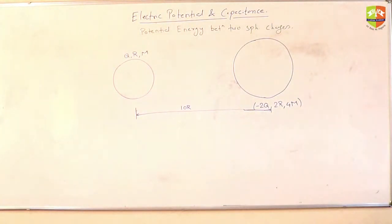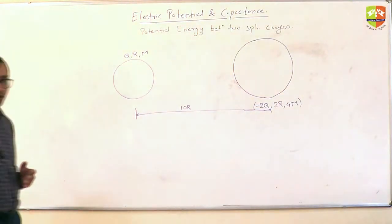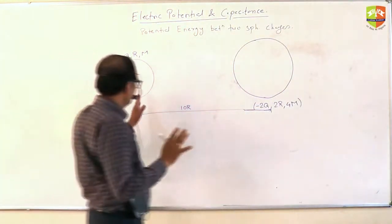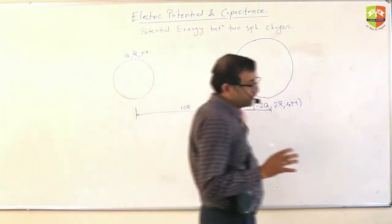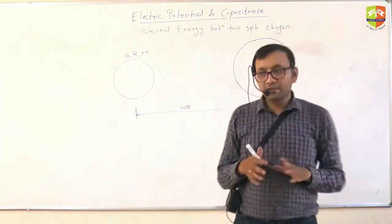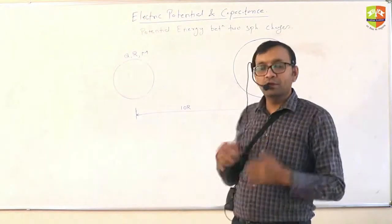K2 is not zero. When they are about to collide, they will have some velocities. Let's say U1 and U2 are the velocities. I am asking what is U1 and what is U2.